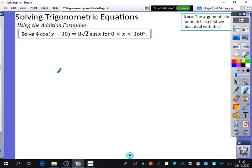What did I say by argument? What does argument mean? Good, the input inside the function. It's the angle really. I just say argument because I find it a bit easier to say. So in this case, the argument on the left-hand side is x minus 30, and the argument on the right-hand side is x.